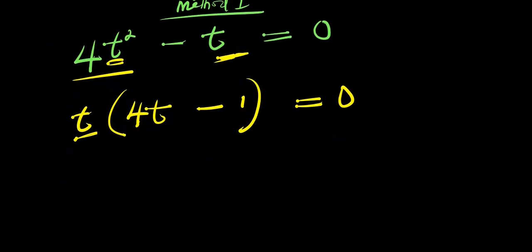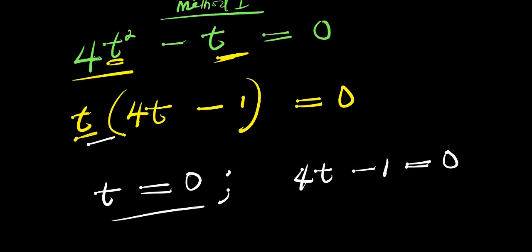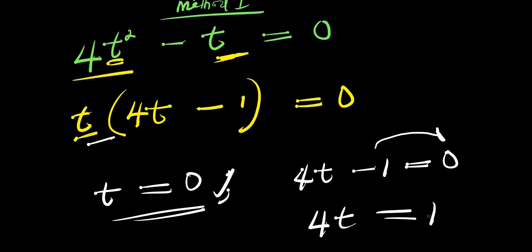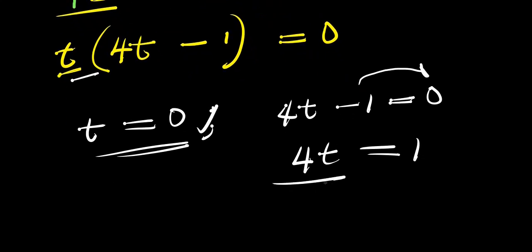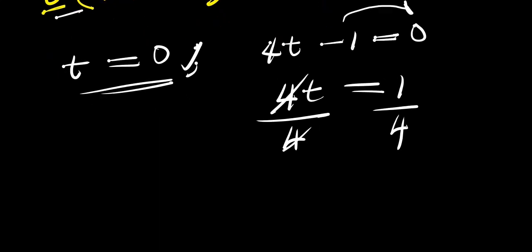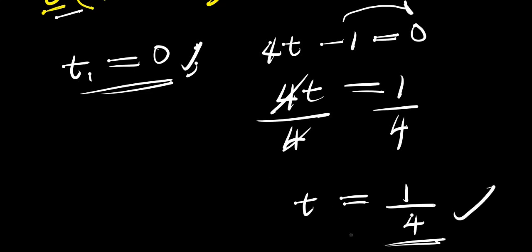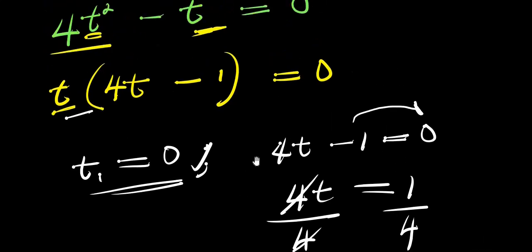So at this point, I can equate t equals 0, and also have 4t minus 1 equals 0. The first is solved already, so let's solve the second. Moving the negative 1 over gives positive 1, so 4t equals 1. Dividing both sides by 4, the 4s cancel and I get t equals 1 over 4. So t₁ equals 0 and t₂ equals 1 over 4. That's method one.